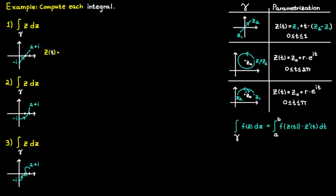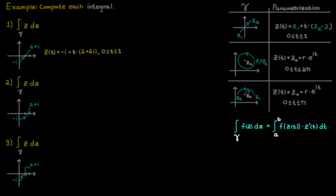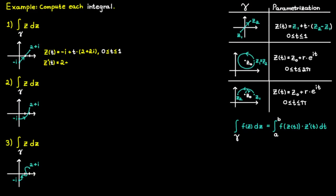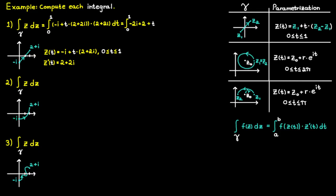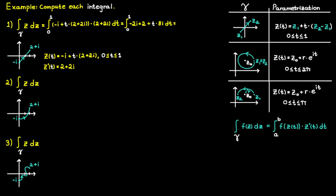With c1 as minus i and c2 as 2 plus i, we get the parameterization, and note that 2 plus i minus minus i can be rewritten as 2 plus 2i. The t values span between 0 and 1. The derivative of this parameterization with respect to t is simply 2 plus 2i. Now we have everything we need: we replace c in the integrand with our parameterization, multiply by the derivative, and the integral limits are the upper and lower bounds of t. Expanding this expression, the factor 4 plus 4i plus 4i minus 4 simplifies to 8i.